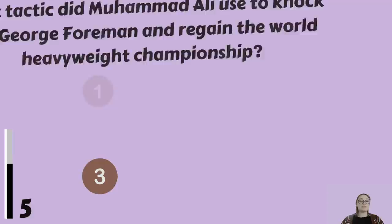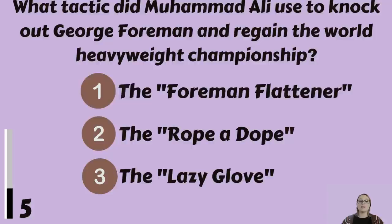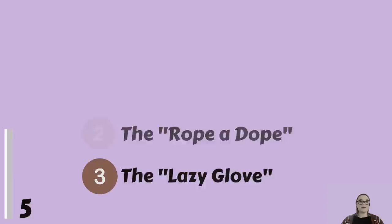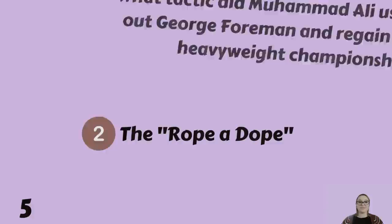What tactic did Muhammad Ali use to knock out George Foreman and regain the World Heavyweight Championship? The Foreman Flattener, the Rope-a-Dope, or the Lazy Glove? That would be the Rope-a-Dope.